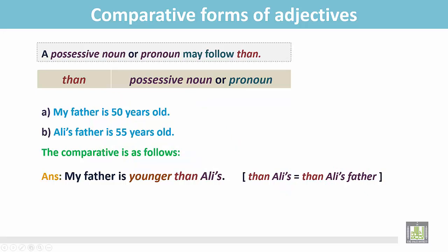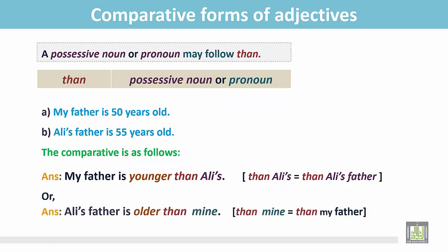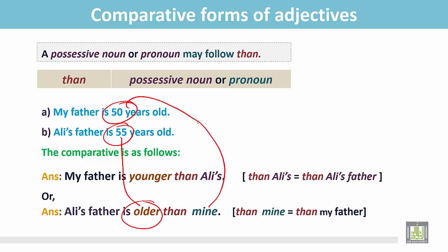Or, we can write the sentence this way: Ali's father is older than mine. Ali's father is 55 years old and my father is 50 years old, so Ali's father is older than mine. Here 'than mine' means 'than my father'. We write 'mine' after 'than' and it is a possessive pronoun.